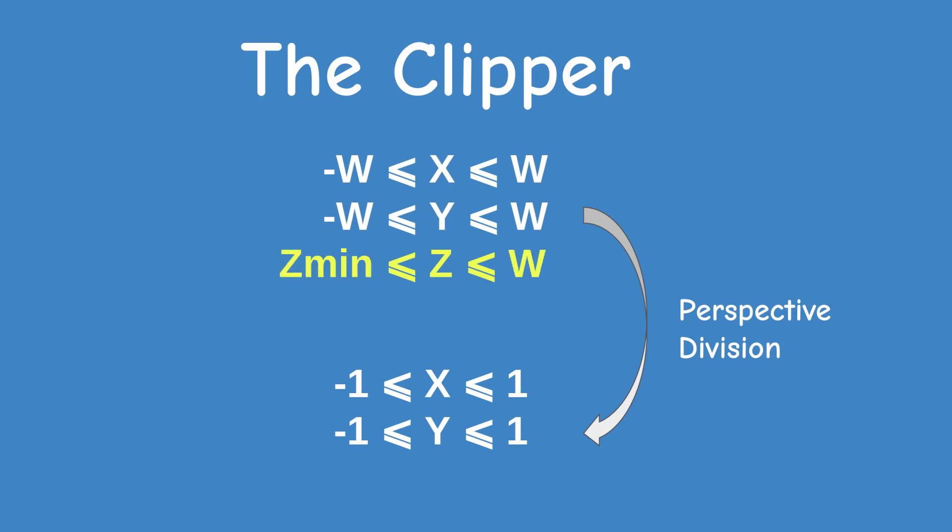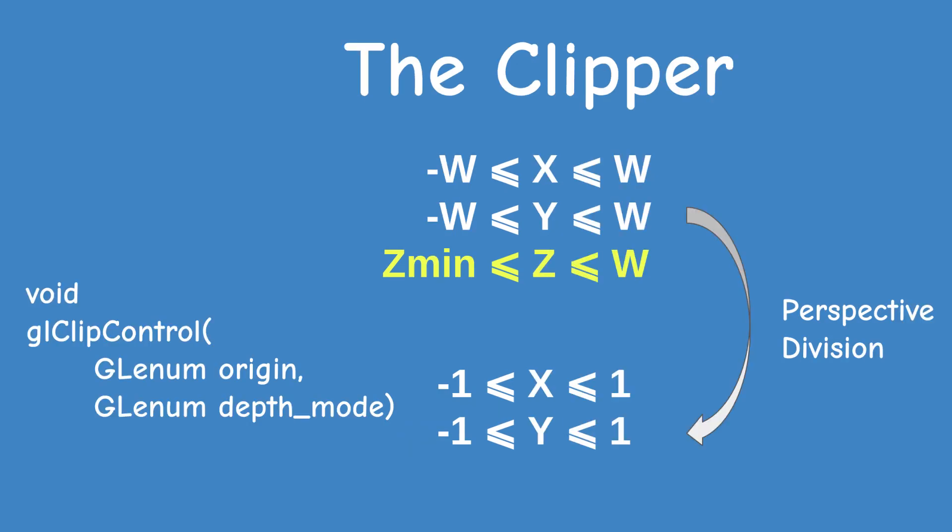The maximum value of Z is clipped to positive W as usual, while the minimum is set to Zmin. The value of Zmin depends on the function glClipControl. This function takes two enum arguments: an origin and a depth mode. If the depth mode is set to negative 1 to 1, the value of Zmin is negative W. If the depth mode is 0 to 1, Zmin is set to 0.